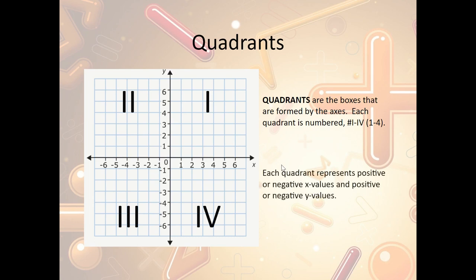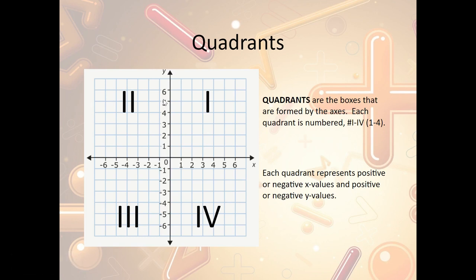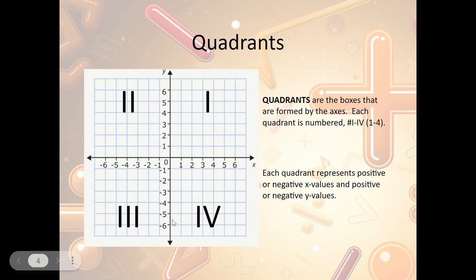Notice each quadrant represents positive or negative x values and positive or negative y values. Quadrant one represents positive x values and positive y values. Quadrant two represents negative x values and positive y values. Quadrant three represents negative x values and negative y values. And quadrant four represents positive x values and negative y values.